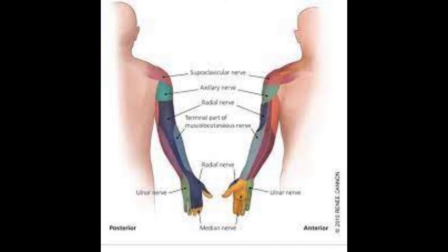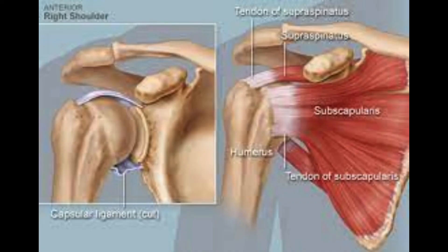4. Cervical spinal stenosis happens when the empty space of the spinal trench limits, packing the spinal line. This pressure can cause deadness or shortcoming in the arms or feet, as well as neck and back torment. It can be caused by cervical spondylosis, neck or back wounds, and growths in the spine.